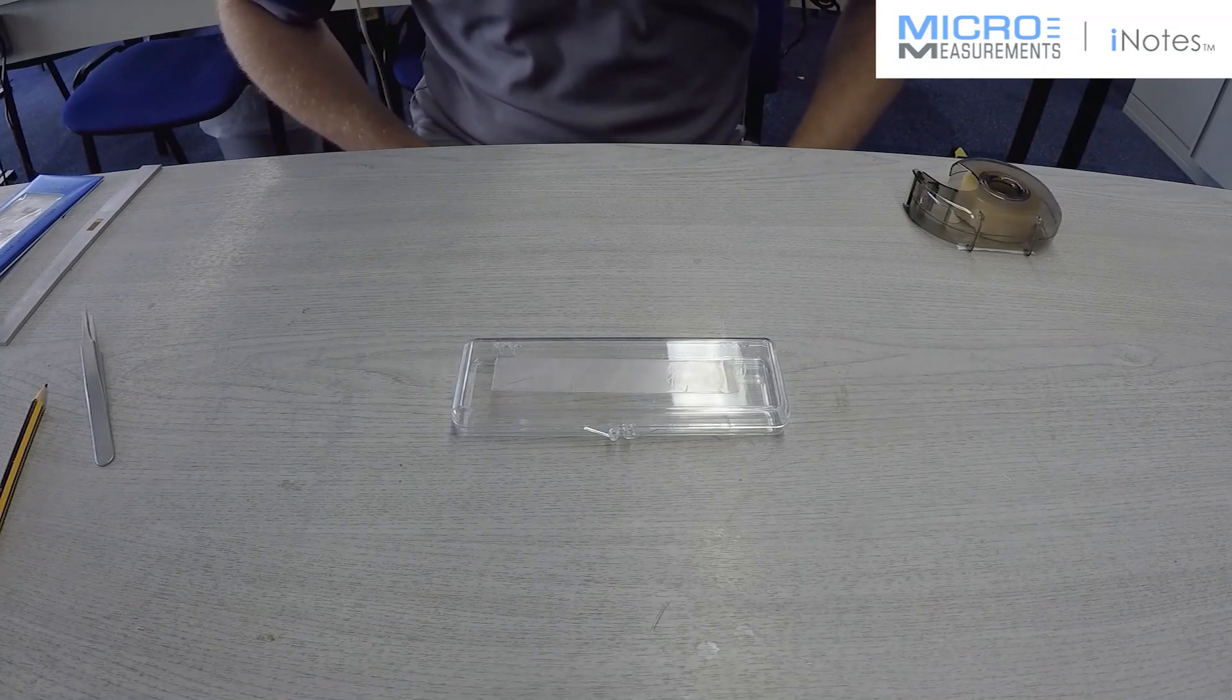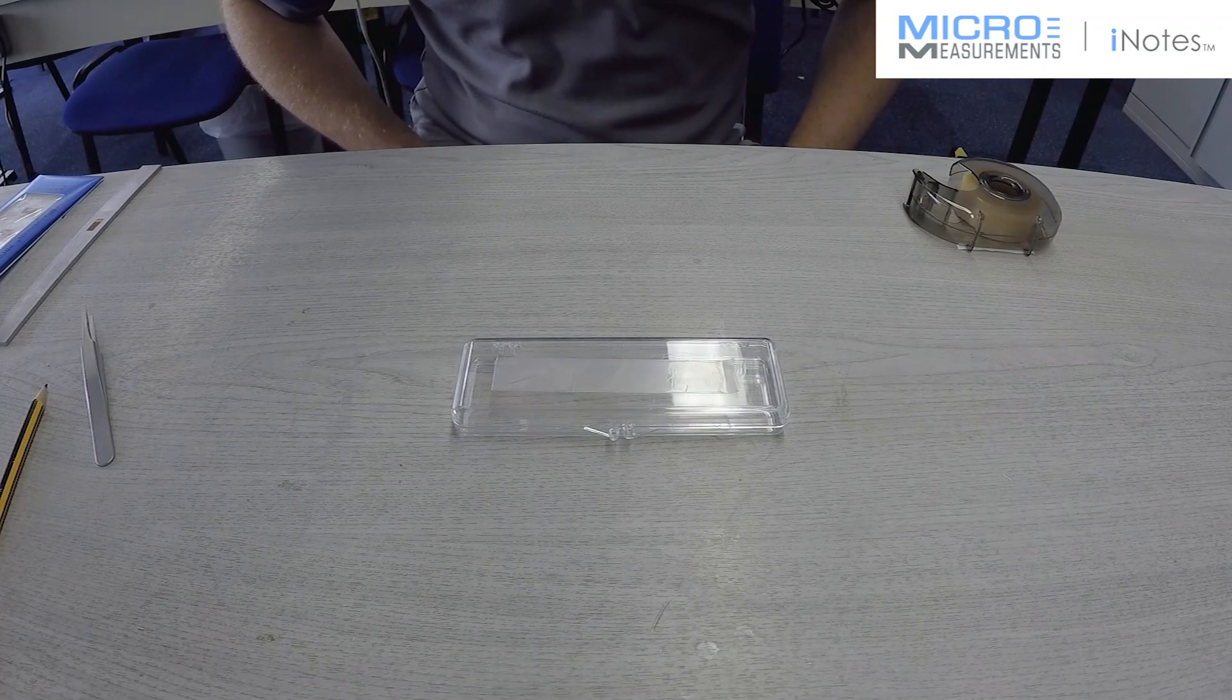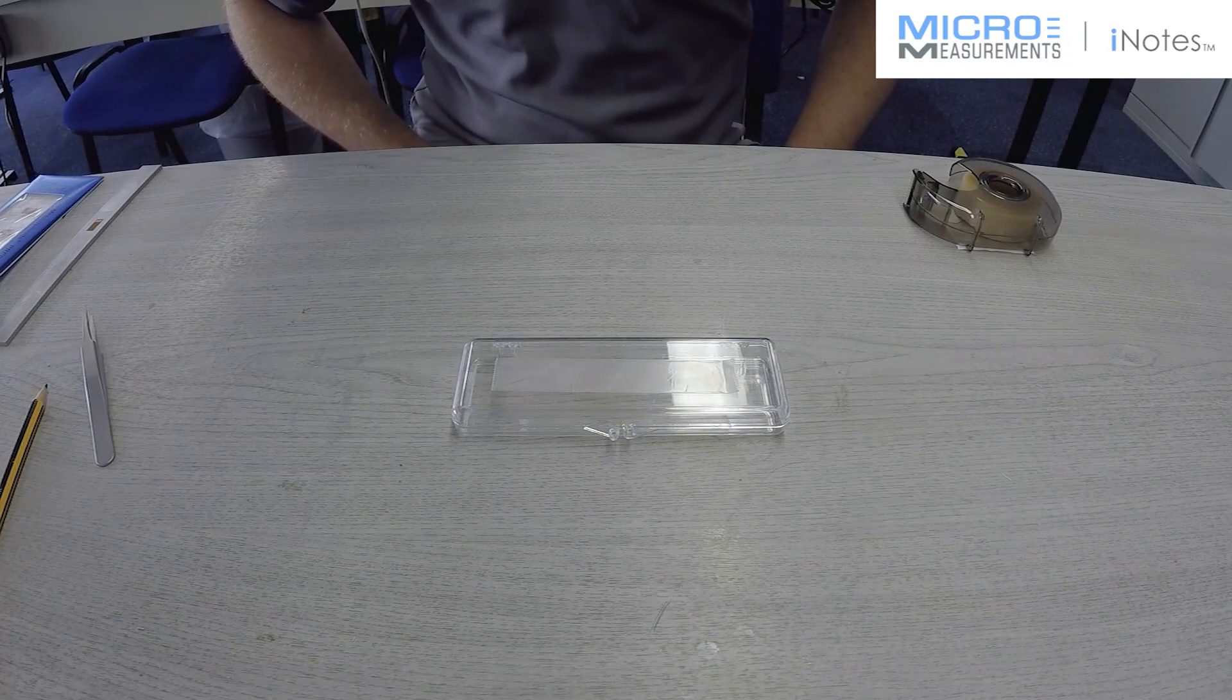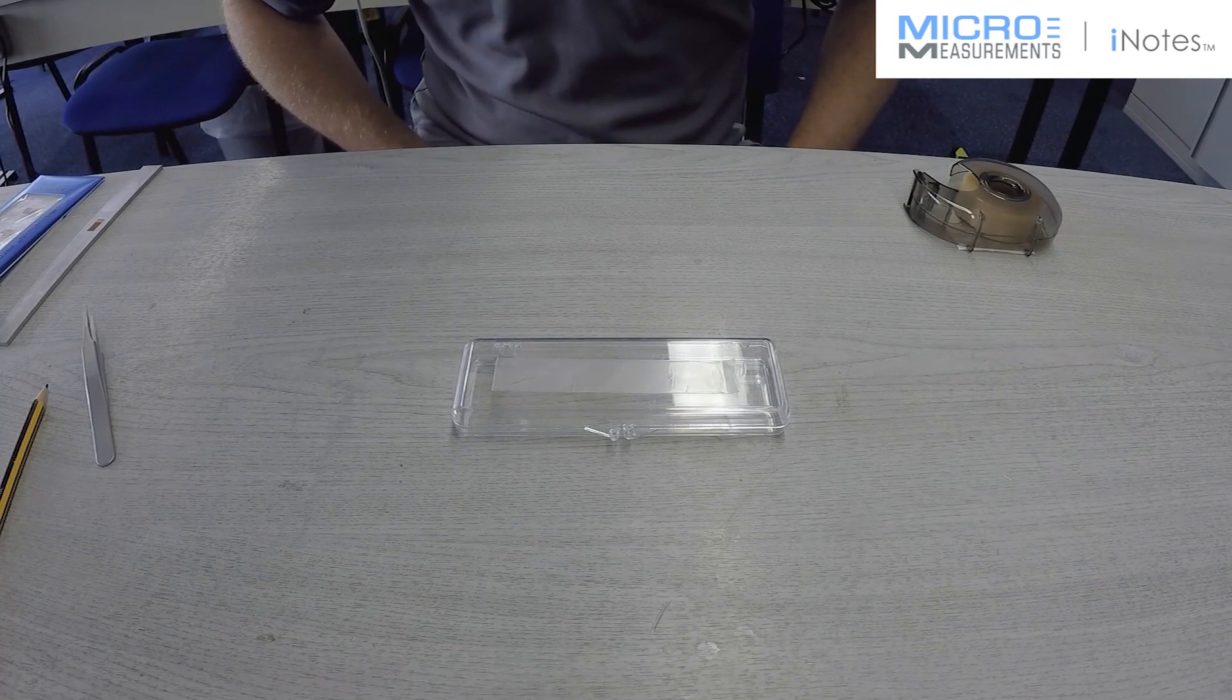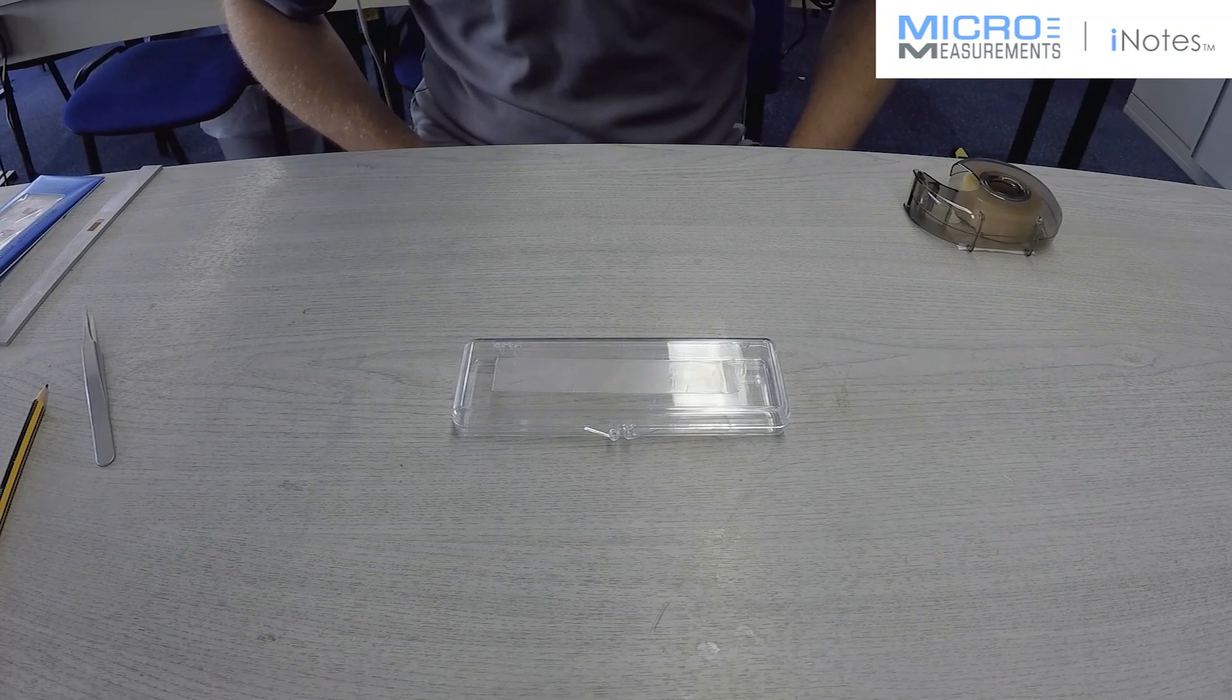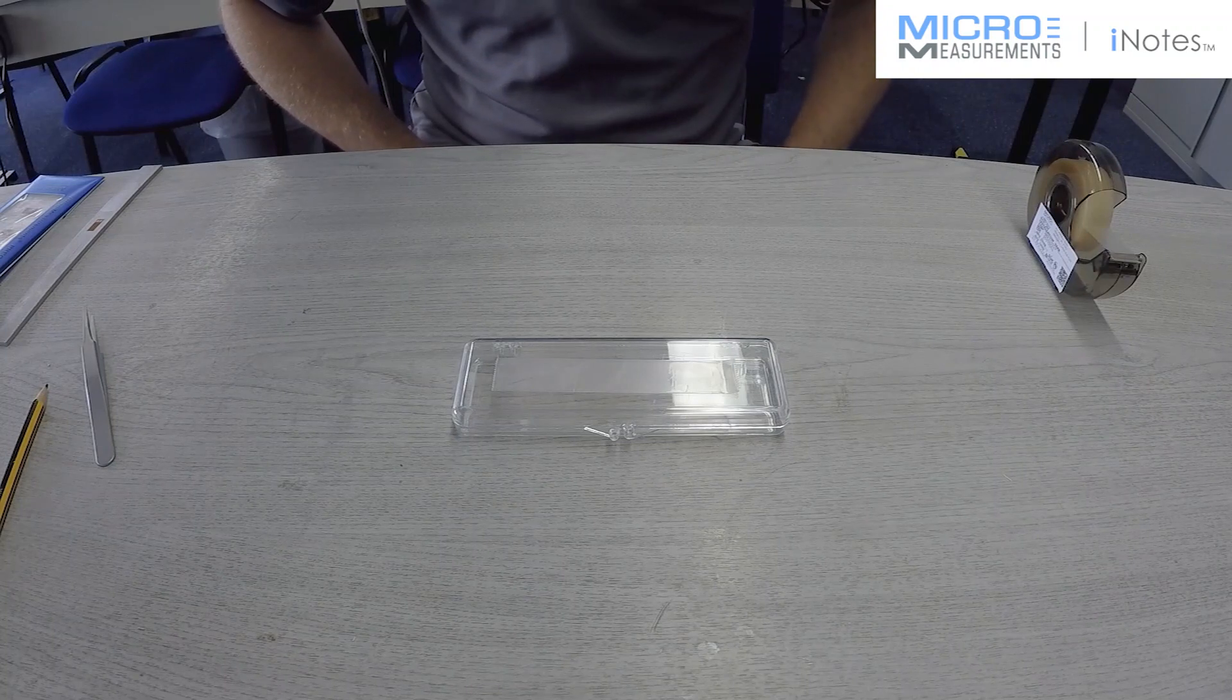And I would just add to that that we know that the tape is compatible with all the micro measurements adhesives because we have tested it and we know that from a room temperature cure to a high temperature cure, maybe even at 100 degrees C or greater, that this tape when it cools back down and you're ready to remove it, it's going to come off cleanly and not contaminate the strain gauge installation.